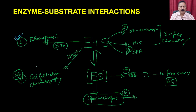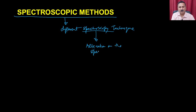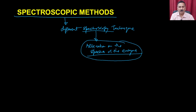We have discussed electrophoresis and chromatography methods. Now let us move on to the spectroscopic method. In spectroscopy, you utilize different types of spectroscopy techniques. Spectroscopy means you are going to see alterations in the spectra of the enzyme or substrate. Alteration in the spectra can happen when the substrate interacts with the enzyme and changes the electronic configuration of key residues, for example the lone pair of electrons on serine hydroxyl groups or arginine amino groups.